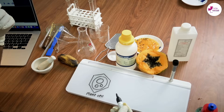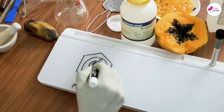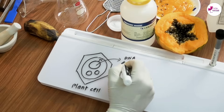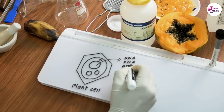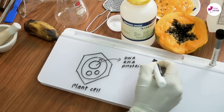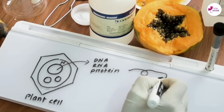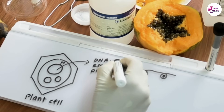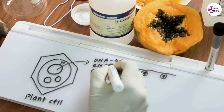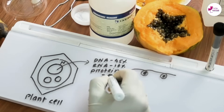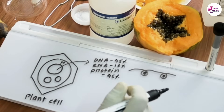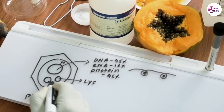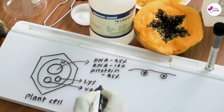Consider a banana plant cell — inside the nucleus there is DNA, RNA, and protein. The DNA is bound to proteins called histone proteins. DNA makes up around 45%, RNA around 10%, and protein around 45% of the cell's nuclear contents.